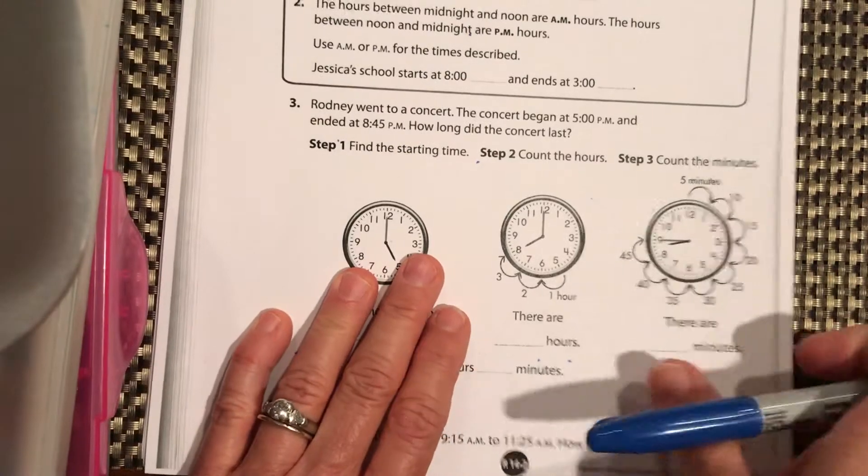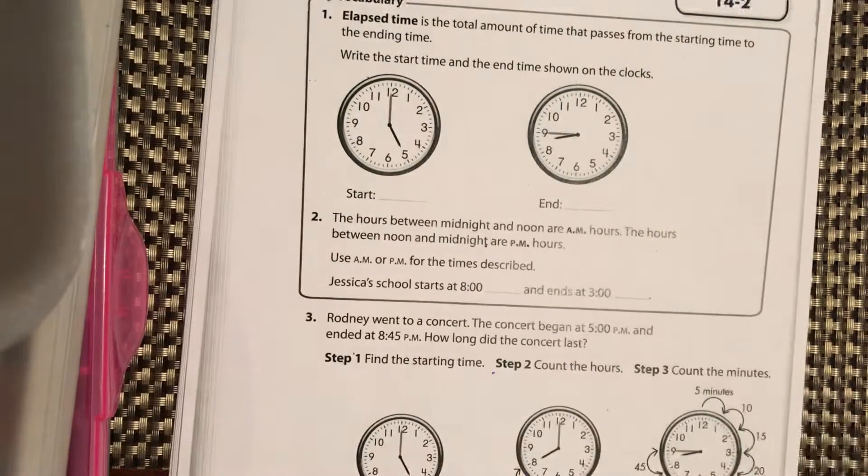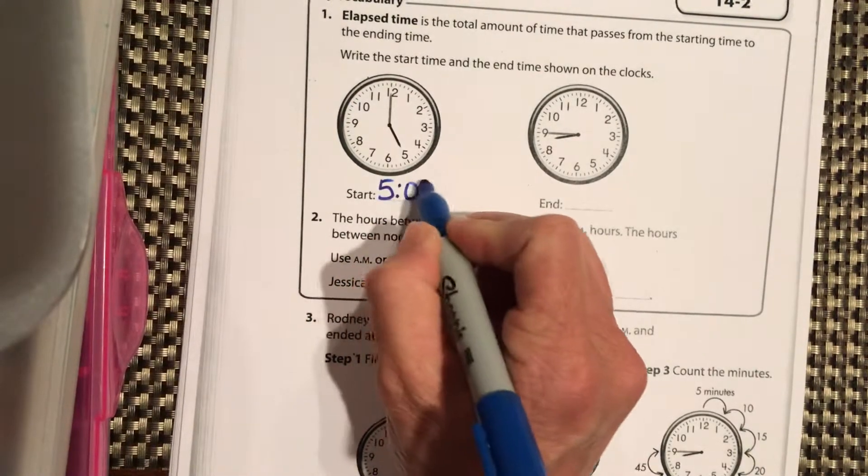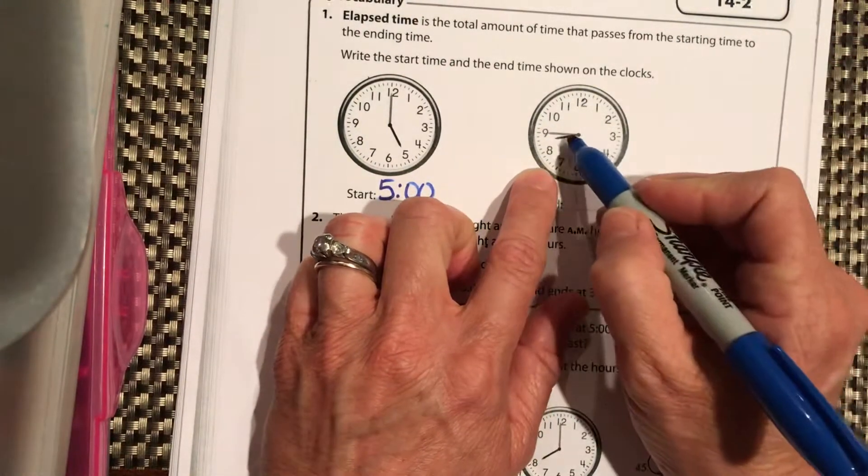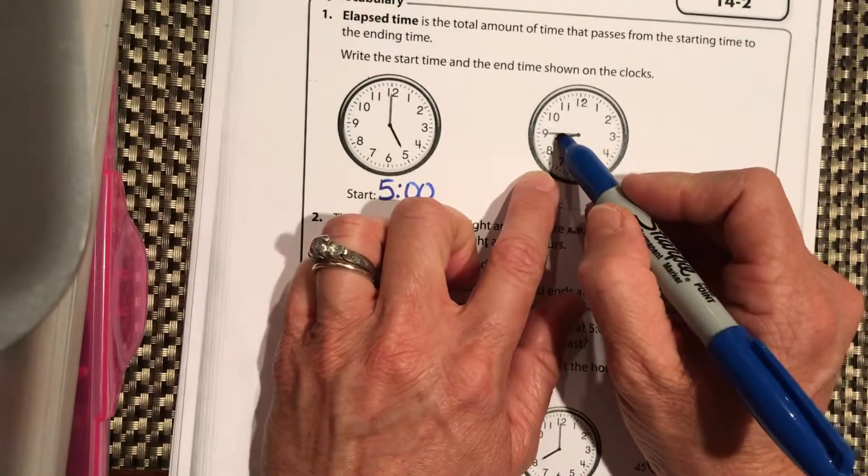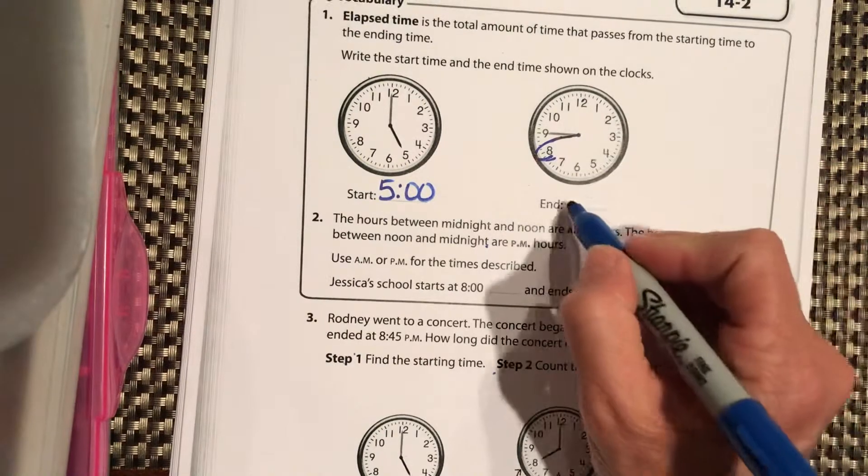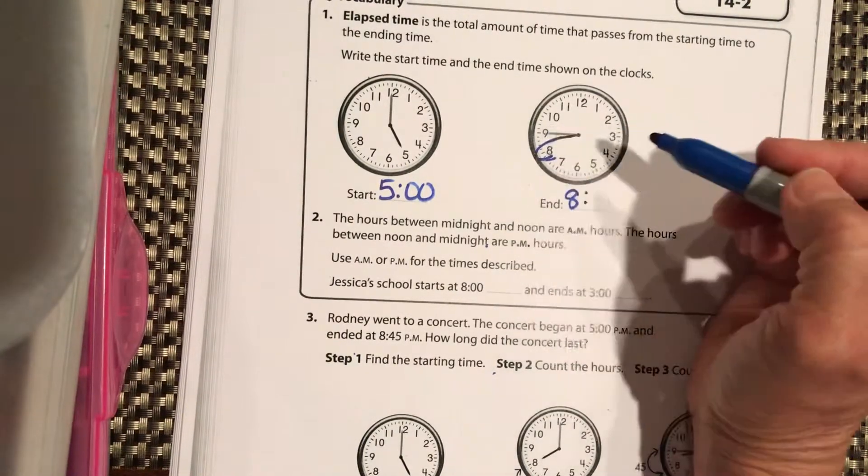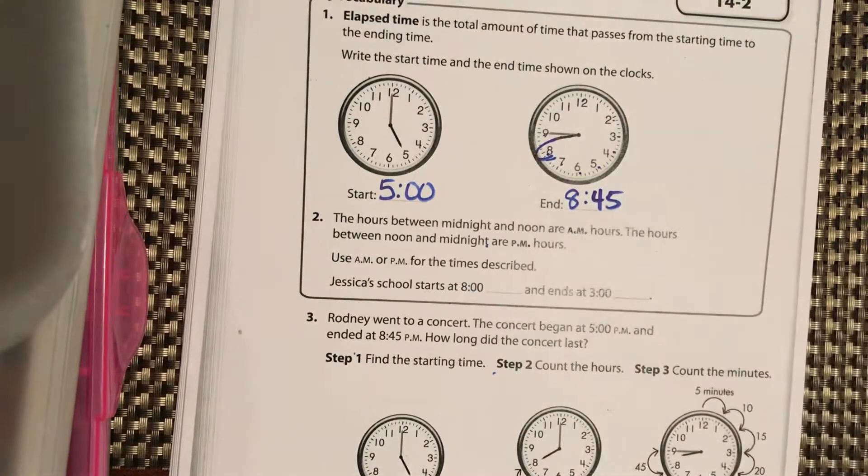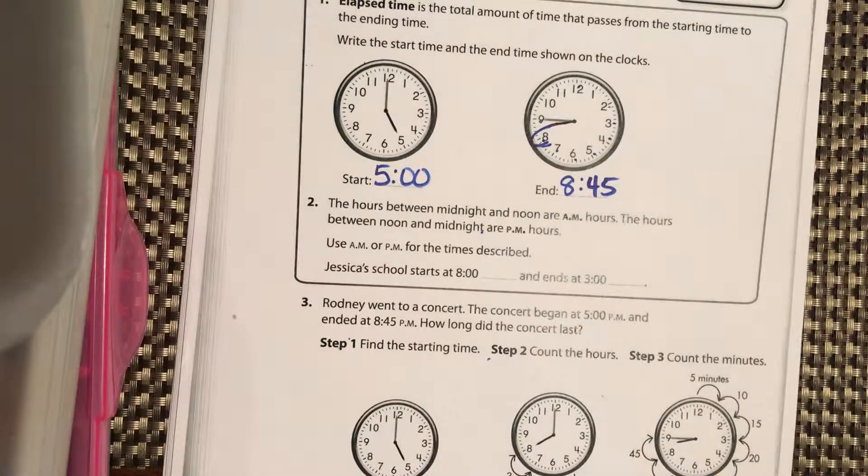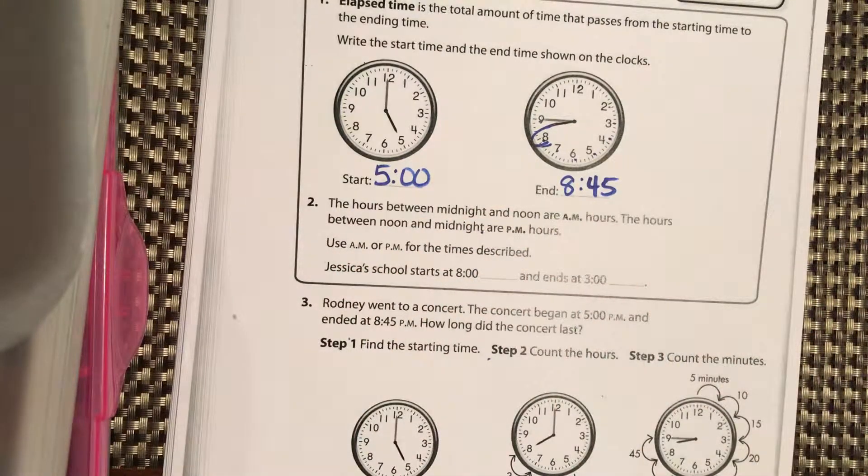Okay, write the start time and the end time. The hour hand is at the 5. The minute hand is exactly at the 12. So, we write down what time that is. It should be 5 o'clock. Now, our end time, it's a quarter to something, right? It's almost the next hour. Now, where is this hour hand pointing? It's in between the 8 and the 9. So, it's still 8-something. You can always hook that around the number that it's passed. So, it's 8-something and then how many minutes passed there? We should know 5, 10, 15, 20, 25, 30, 35, 40, 45, right? So, our start time is 5 o'clock. Our end time is 8:45.